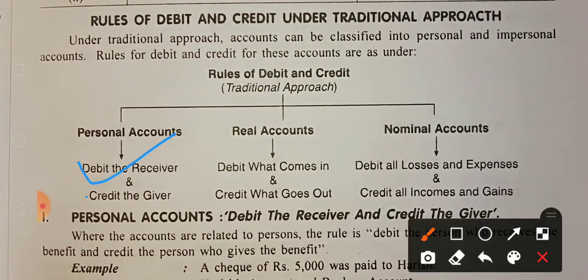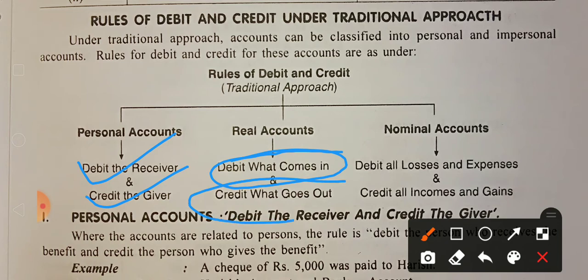The personal account rule is: when the person receives the money, debit the receiver; when the goods are sold or the person is the giver, credit the giver. When you have sales, you bring in money. The real account and asset account rule follows: debit what comes in, credit what goes out.